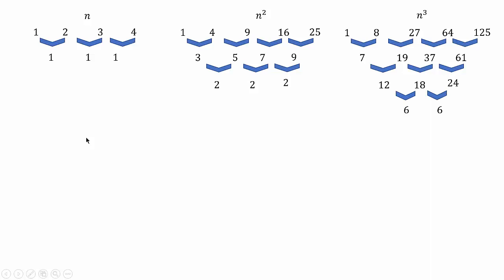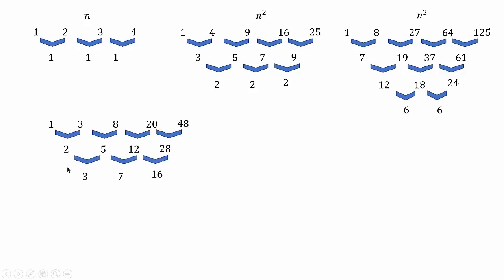But today we are going to learn some new type of patterns. Let's find the differences of consecutive terms again and again. Our aim is to get the common difference, but what happens in this pattern is we cannot get a common difference. Instead, we found a new pattern over these diagonal elements: 1, 2, 3, 4, and 5. So it seems that these go on increasing by 1.